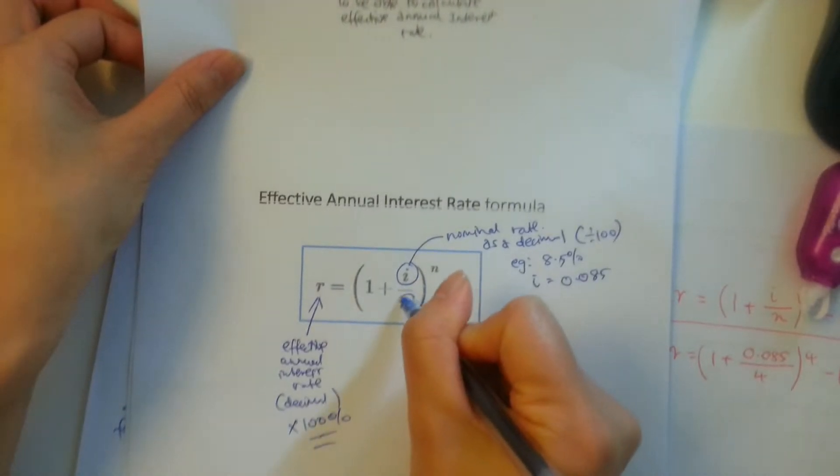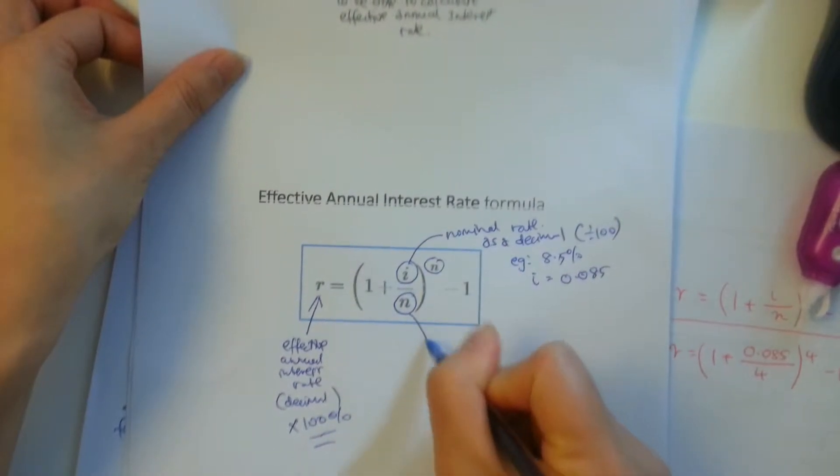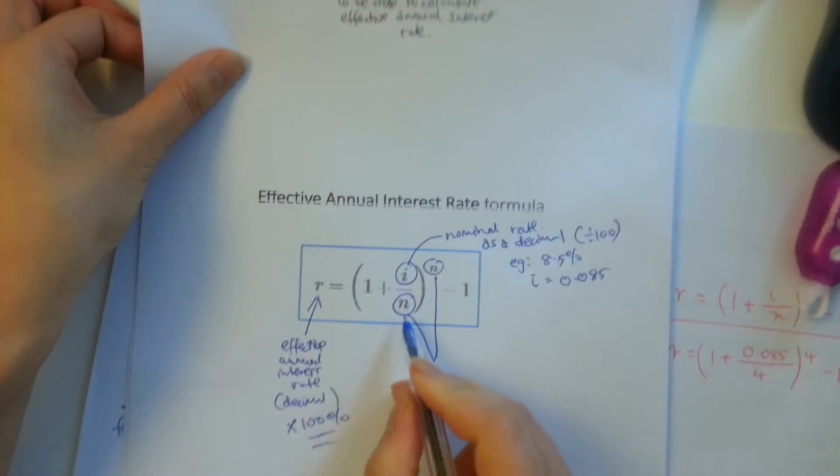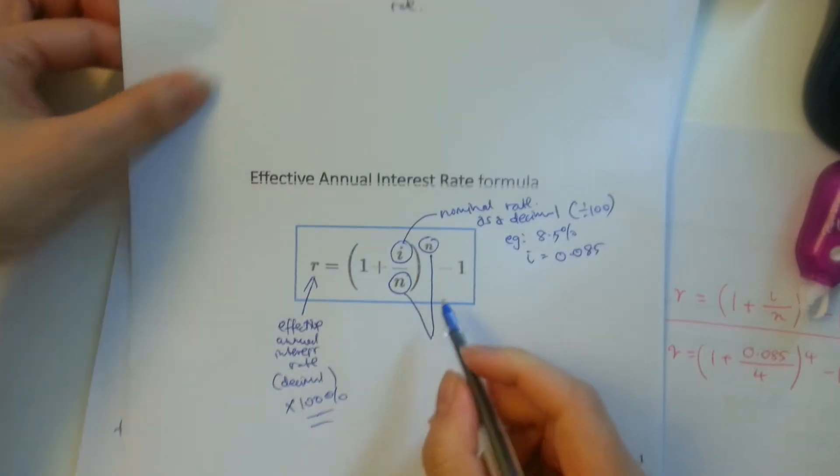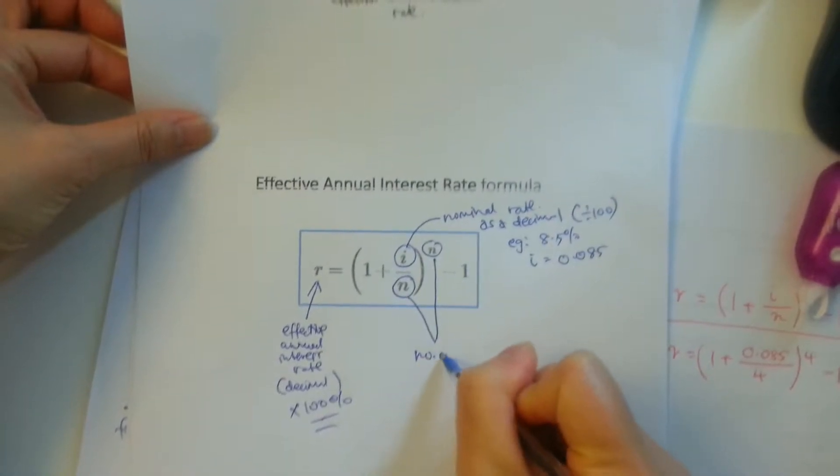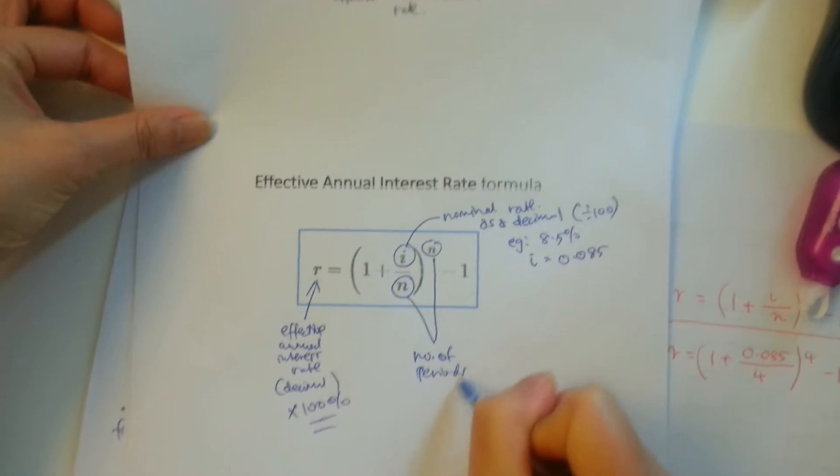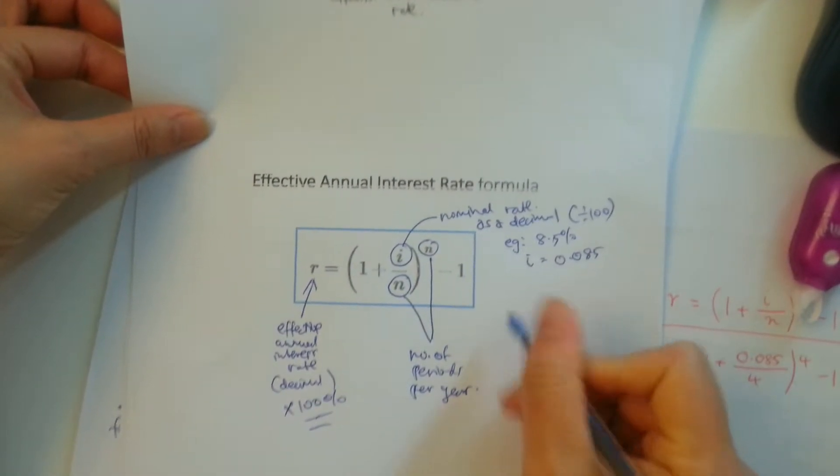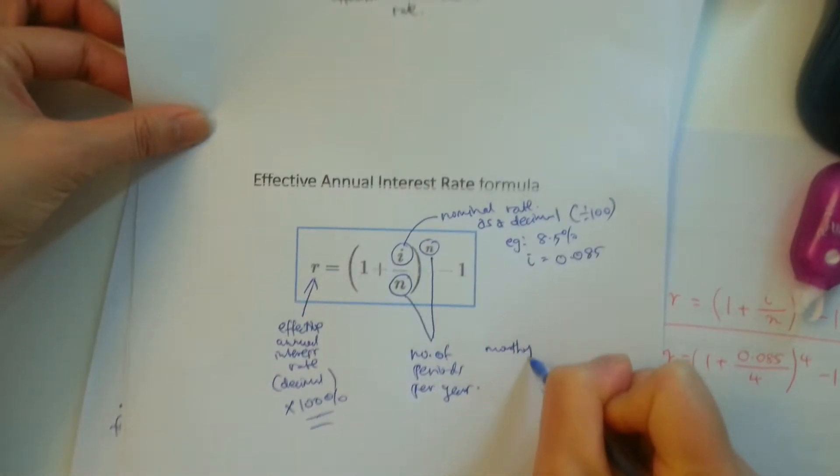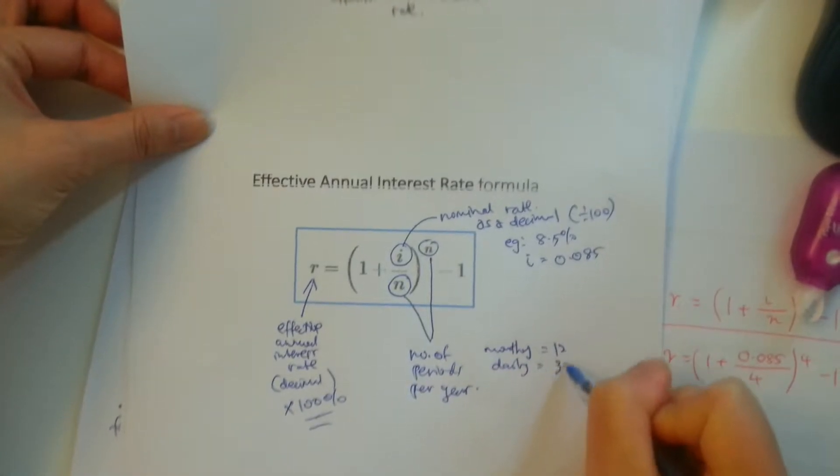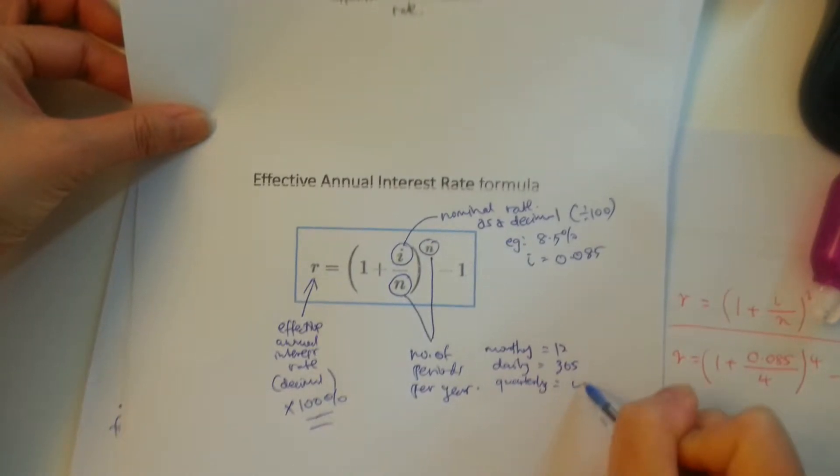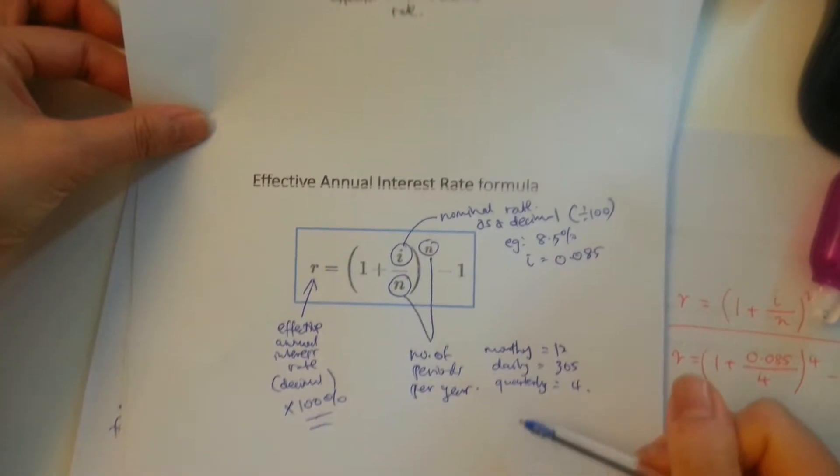The N, this is really confusing. There's two N's here. One is a power and one's what you're dividing by. Basically, it's the number of periods per year. So once again, if it's monthly, N will be 12. If it's daily, N will be 365. If it's quarterly, N will be 4. You get the gist.